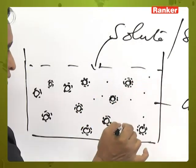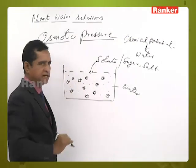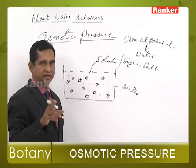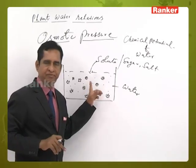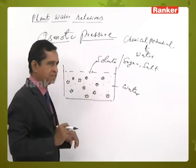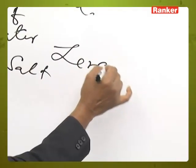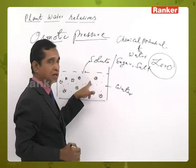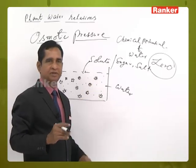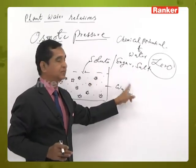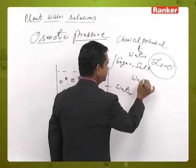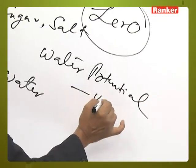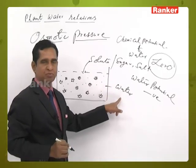But there are water molecules which are free. So, in a system when solute is added, the free energy of the water molecules is reduced. When we set the free energy of pure water at zero, and when we add a solute and the water molecules become bound to the solute molecules, the free energy of water is reduced — it is less than zero. So the water potential is now negative. That we call osmotic potential, or solute potential.